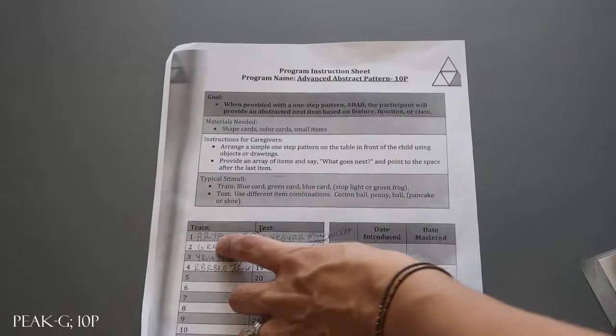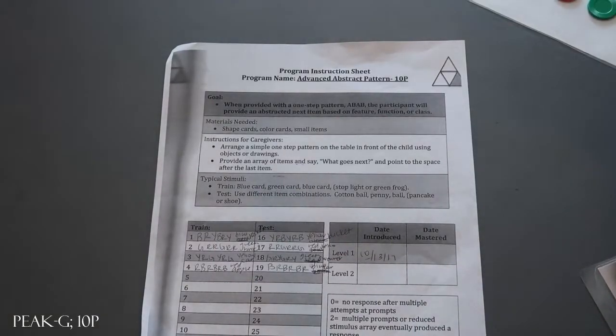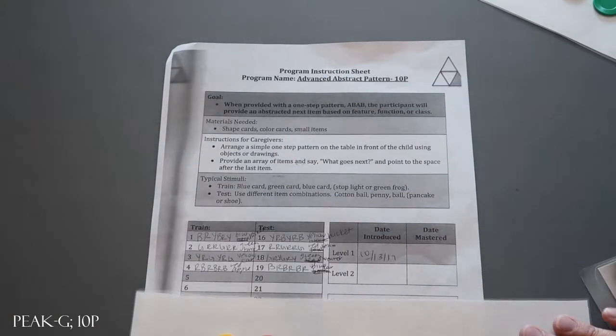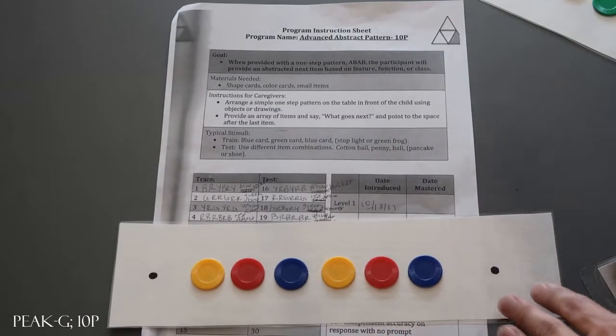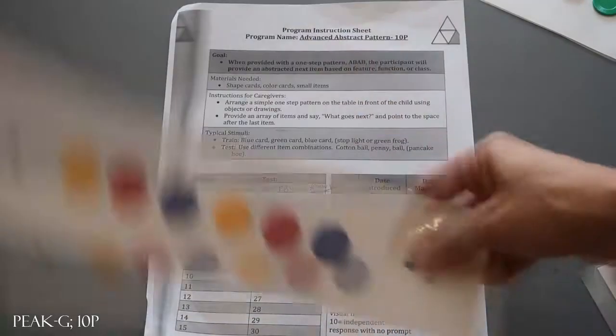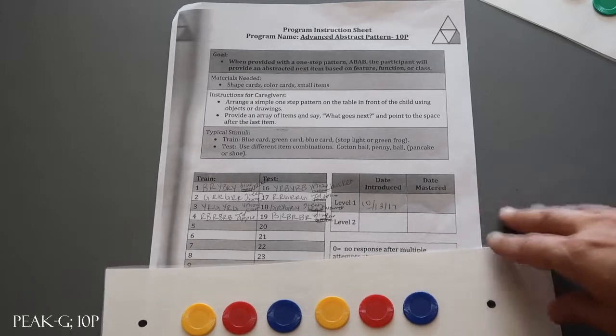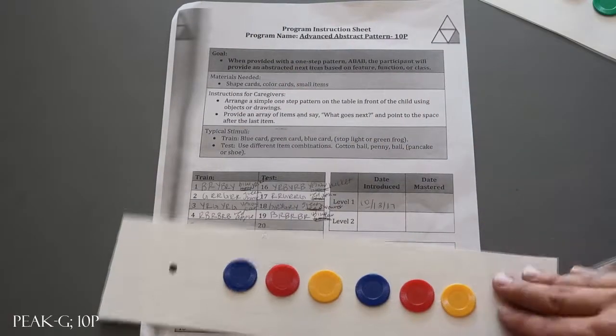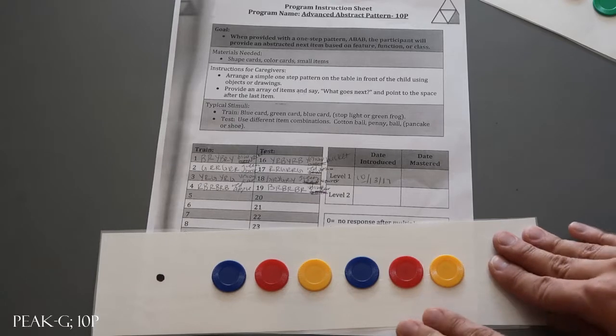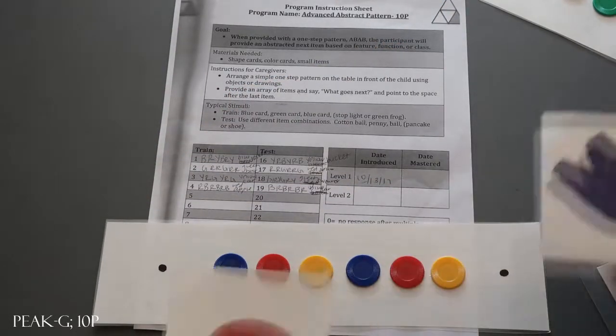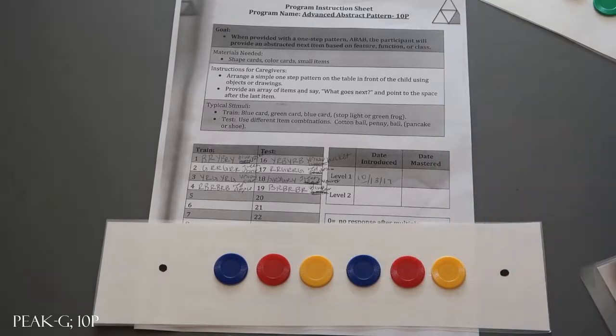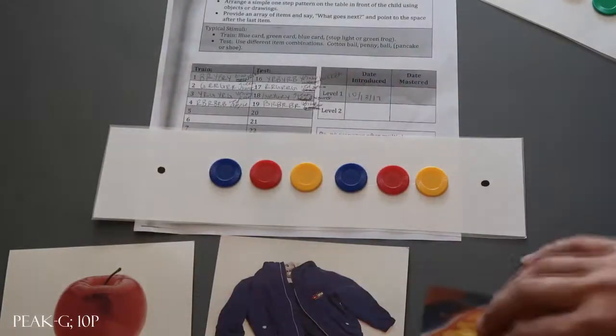So for train class one, blue, red, and yellow. Let's say you're the participant looking at this. Obviously if my participant was on the other side, I'd have this flip so that they're looking at it the right way. But let's say that you guys on camera here are the participant. So I would show this to you, and then I would put out three pictures for you to look at.